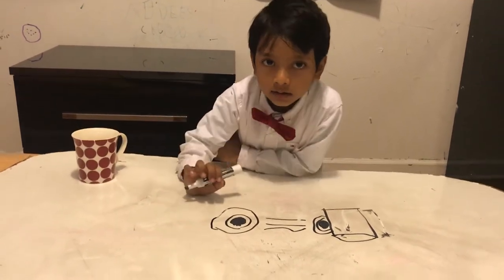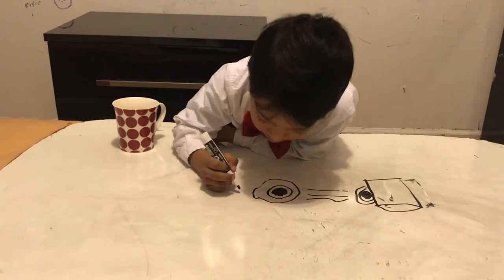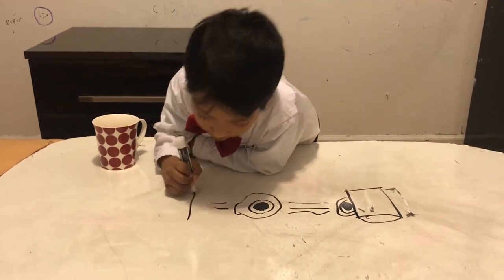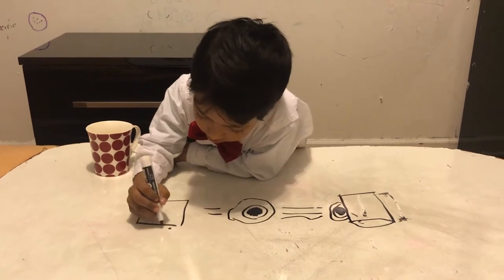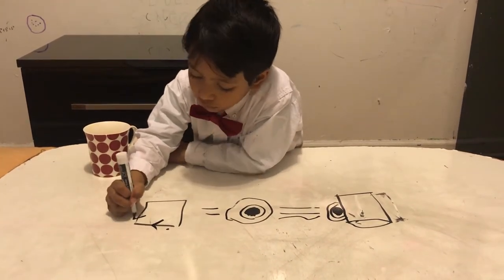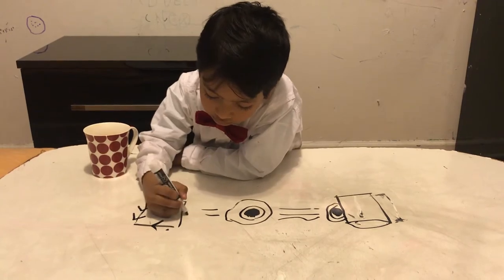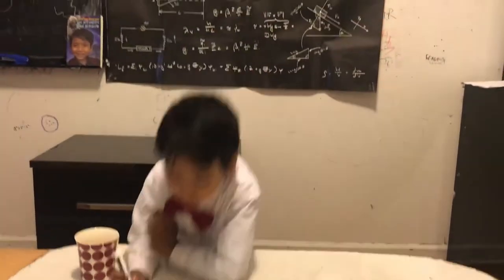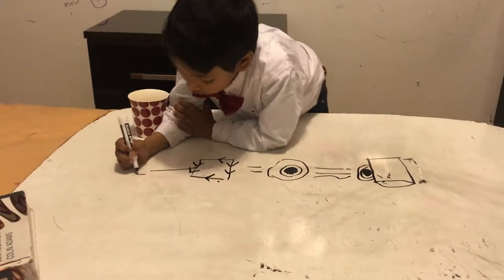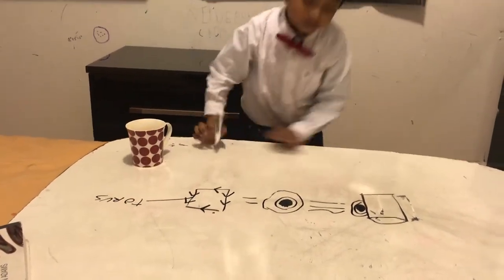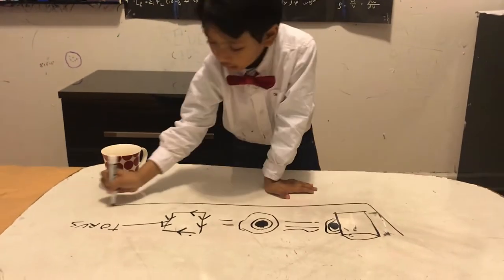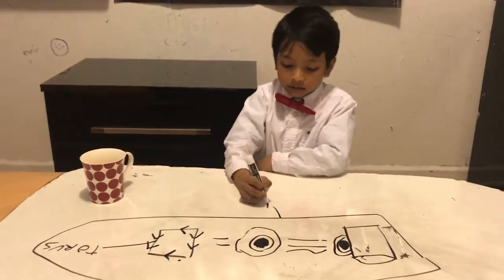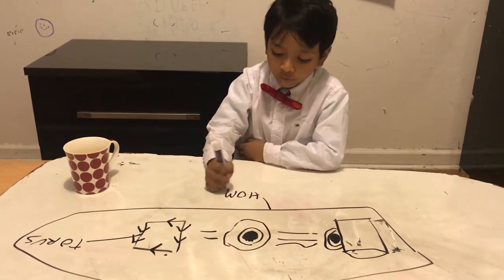This and this, these two are both called something you may know, called a torus. So this is a torus. And this whole thing I'm talking about is homeomorphism.